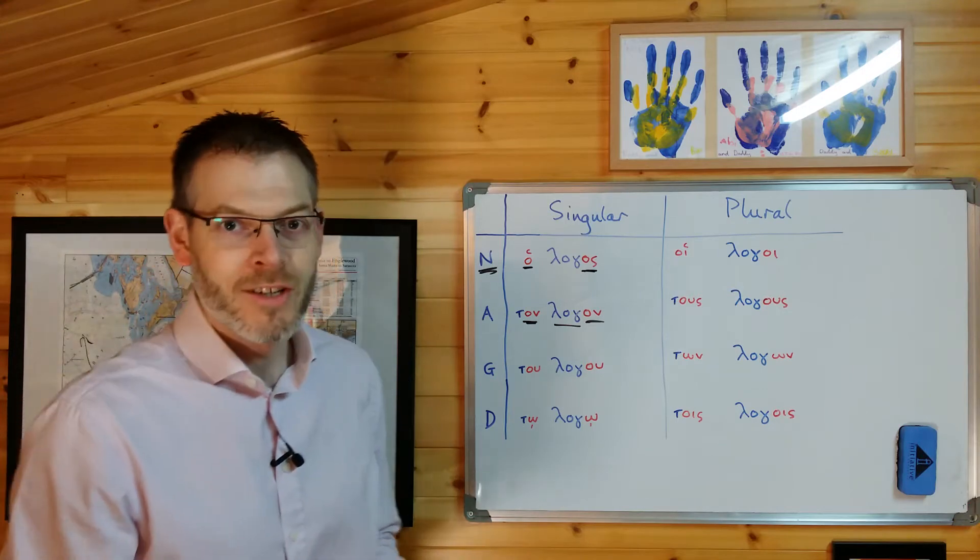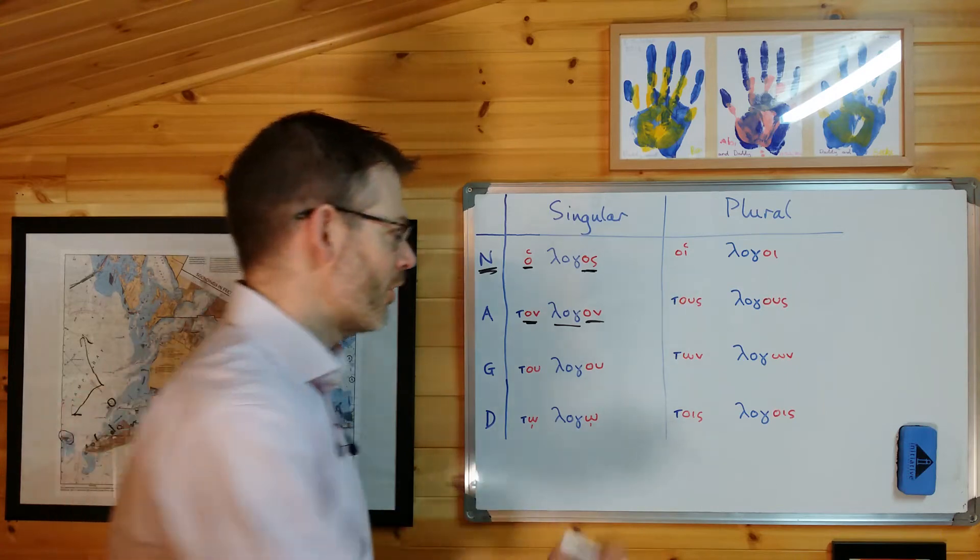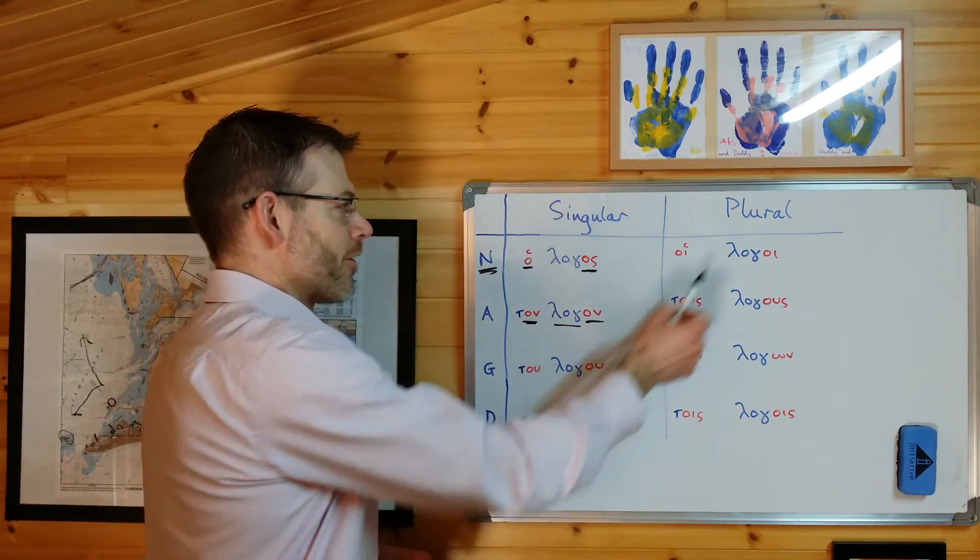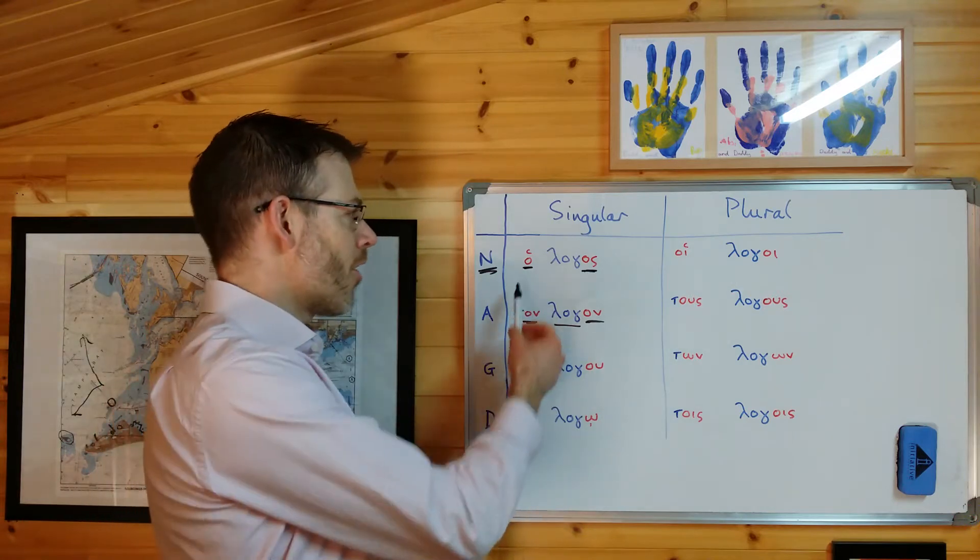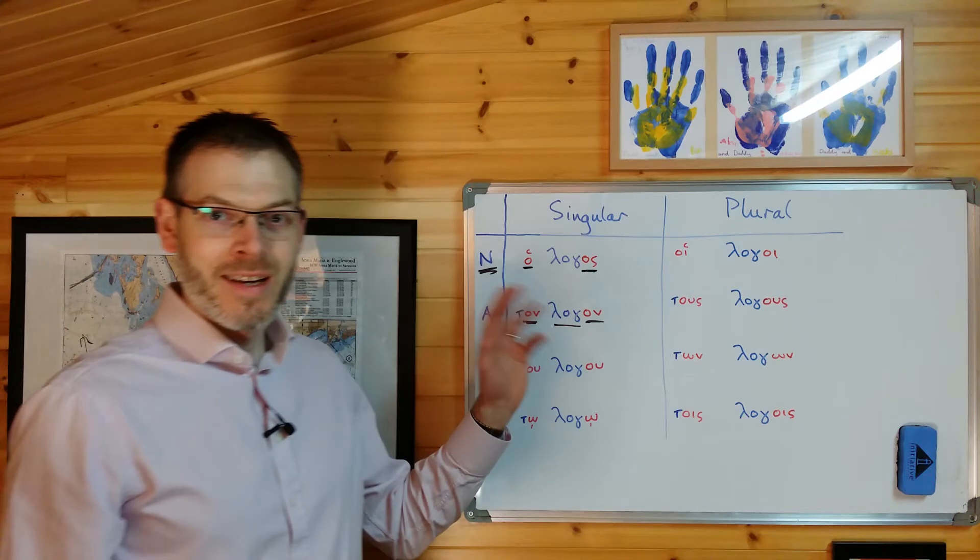So for example, you might have Jesus speaks the word, and the word will be ton logon. If it's plural, tus logos. Now that's what you've learned already. You've learned logos, logon, logoi, logos. And you've learned ho, ton, hoi, tus. Nominative and accusative, singular and plural.